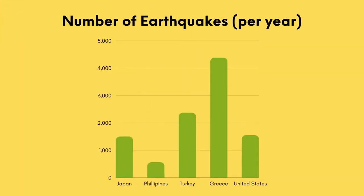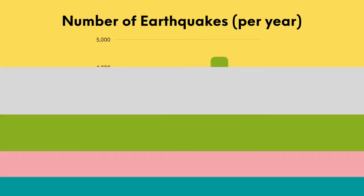Here is the table showing the number of earthquakes per year for five countries. If you look at the table, most of the earthquakes happen in Greece and Turkey among the five — they are the countries with the most earthquakes. That's why we are going to discuss them.